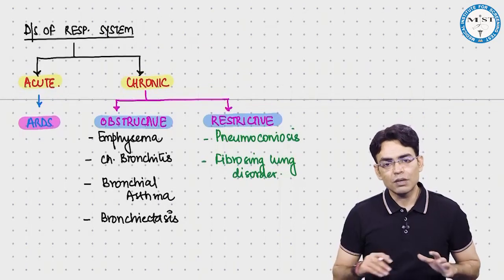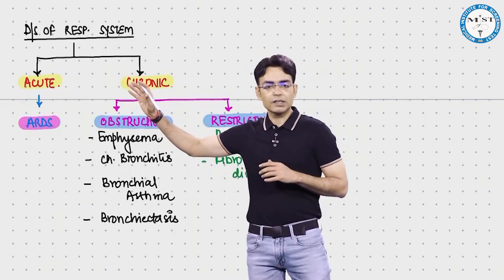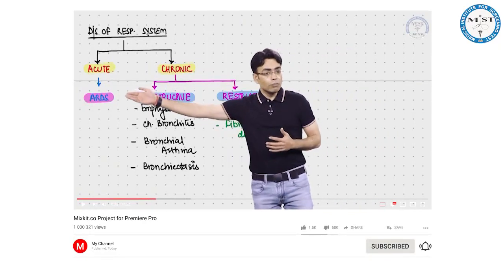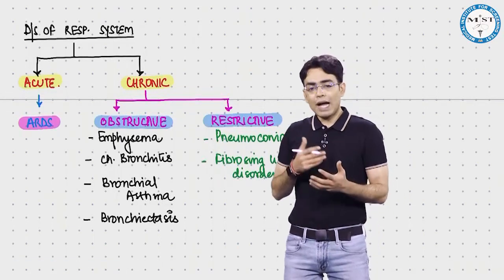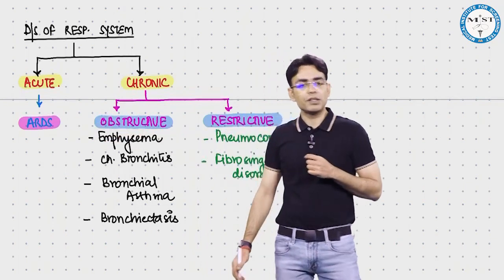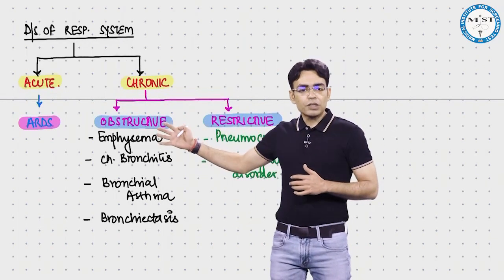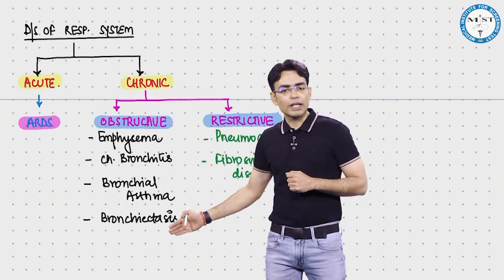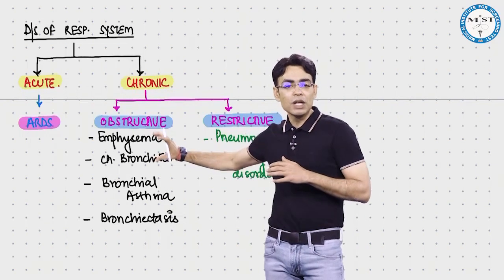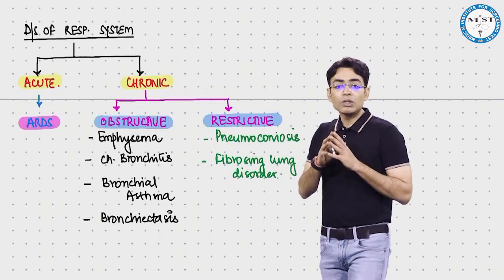After understanding the epithelium, let's start with the diseases of the respiratory system. I have divided the discussion into acute and chronic diseases. For acute, the most important is ARDS - acute respiratory distress syndrome, which was a major cause of death in COVID-19. For chronic, we have obstructive diseases: emphysema, chronic bronchitis, bronchial asthma, and bronchiectasis - emphysema and chronic bronchitis together are called COPD. In restrictive lung diseases, we'll cover pneumoconiosis and fibrosing lung disorders.